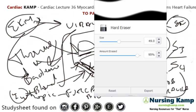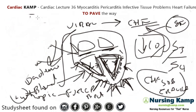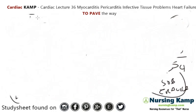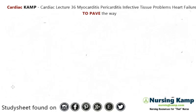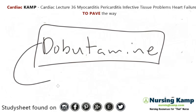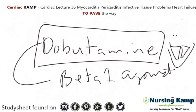Myocarditis is either viral or bacterial and is acute. Patients ultimately may need inotropic medications — more specifically dobutamine, which is a beta-1 agonist. Inotropic means increasing the force of contraction; it beats the heart to improve cardiac output.